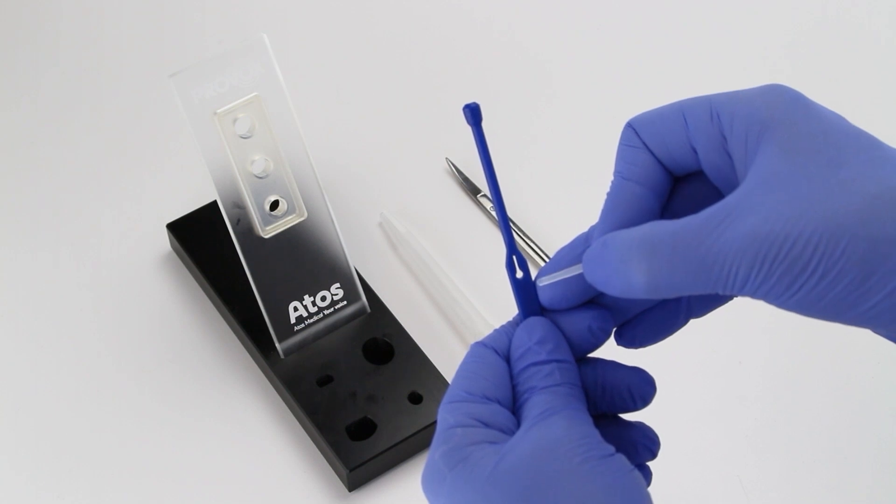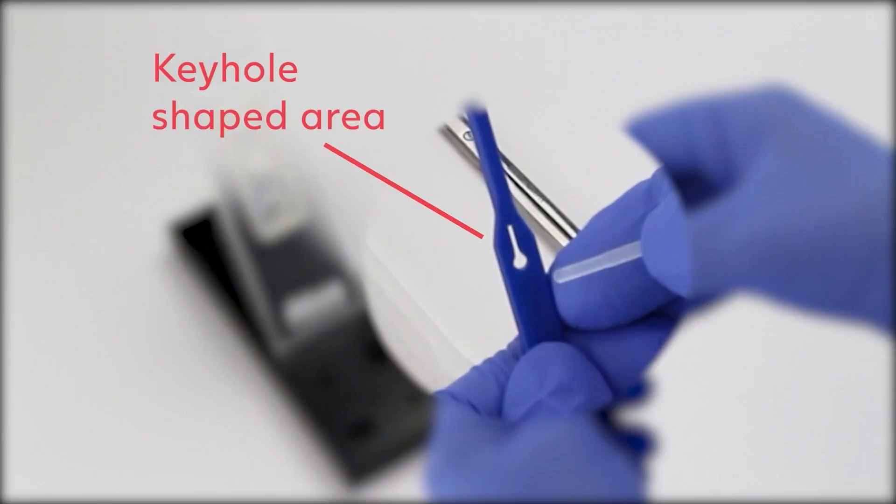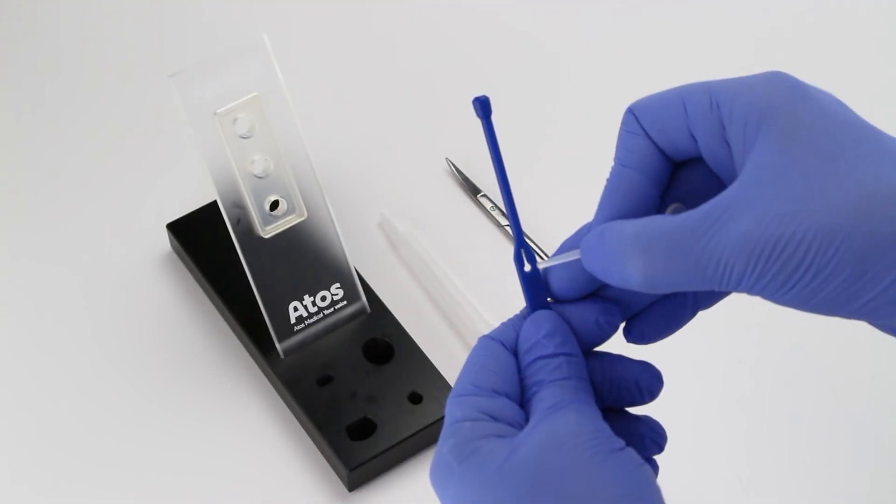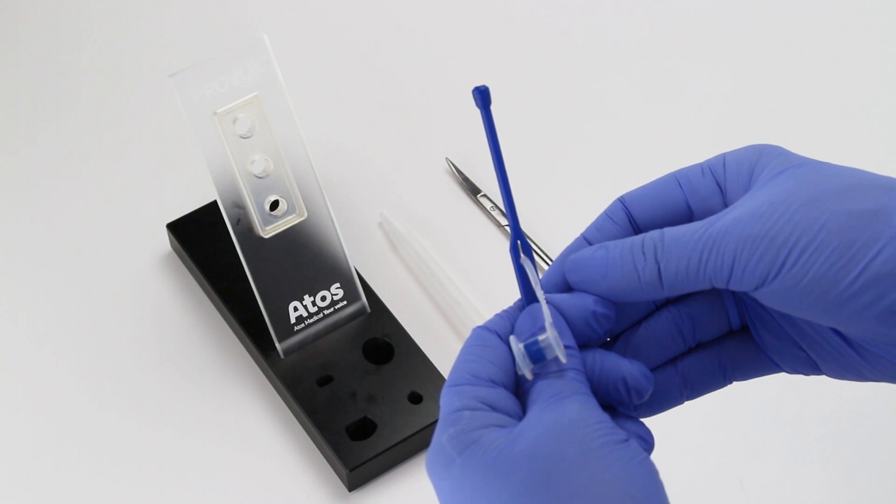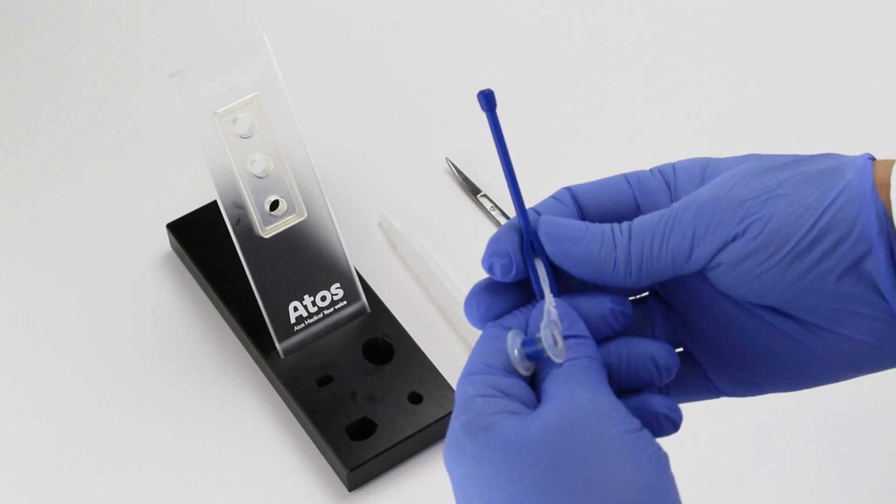Thread the safety strap of the active valve into the keyhole shaped area of the inserter pin. Pull it into the narrower part of the slit to lock into place.